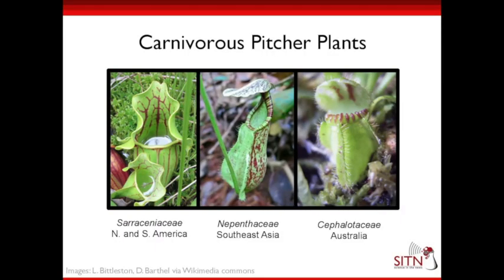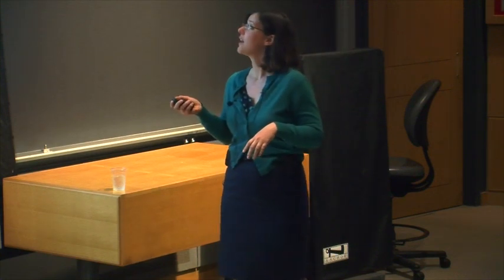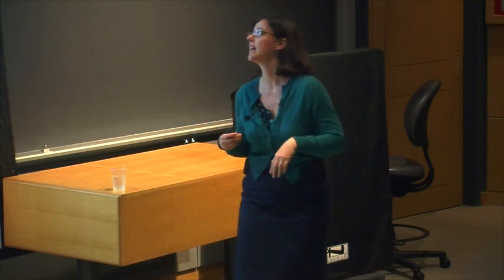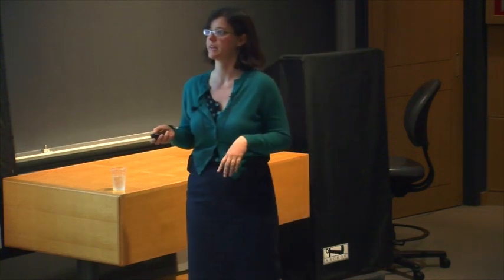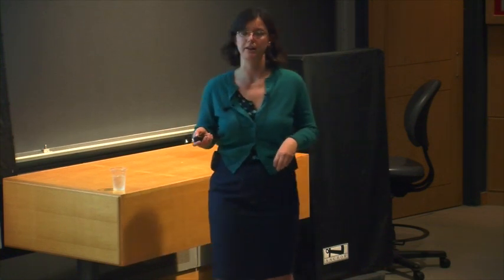These three pitcher plants are all in different families, yet they share a lot: a lid shape around the top, a cup that holds water, a lip around the front where they produce sugary secretions that attract insects — especially ants — very slippery insides, and downward-pointing hairs to guide insects inside. But one is from the family Sarraceniaceae in North and South America; another is Nepenthaceae in Southeast Asia; and the third is Cephalotaceae in Australia — where there's actually only one species, found only in a small part of Western Australia.